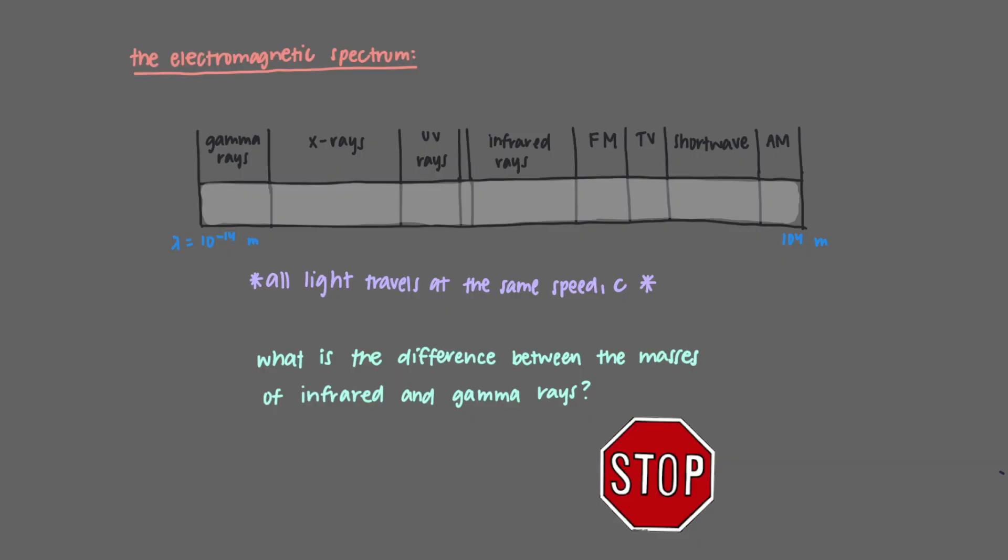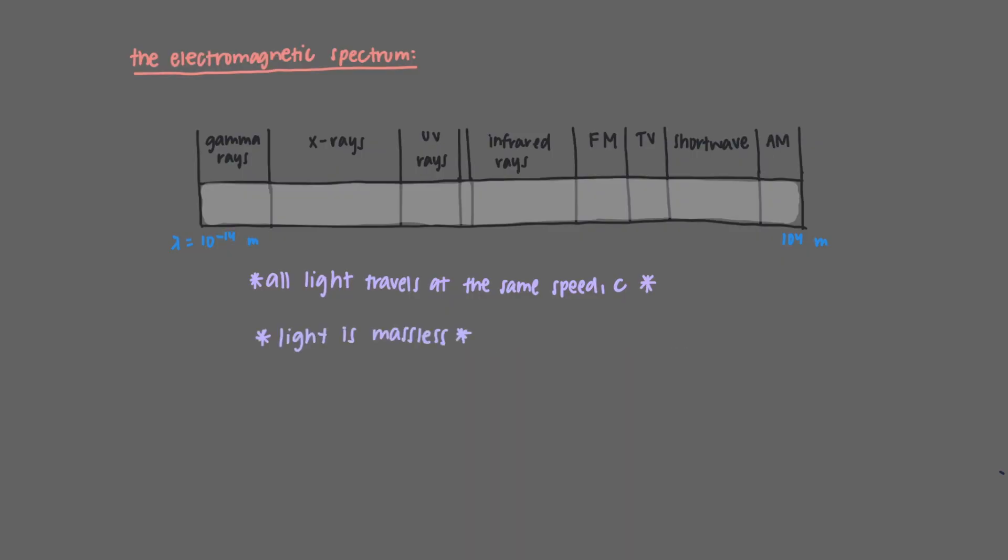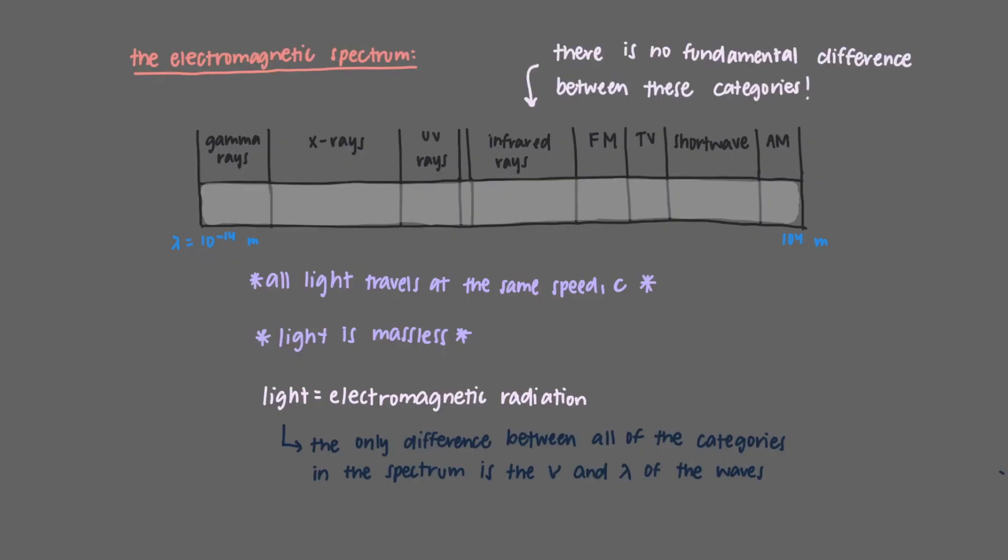What is the difference between the masses of infrared and gamma rays? Light is massless, which makes this the correct answer. Light is synonymous with electromagnetic radiation. The only difference between all of the differently and arbitrarily named categories in the electromagnetic spectrum is the frequency and wavelength of the waves. So while we humans see a narrow range of these frequencies, there is no fundamental difference between the light we see and the majority of light which we don't.